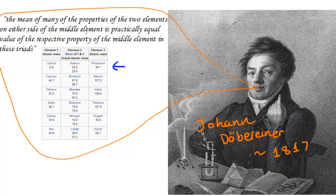In English, what that means is if you look at the elements in this first triad, if you take a look at the properties of this element on the left and this element on the right and take a mean, so if I take the atomic mass, which is one of the properties, and find a mean by adding them together and dividing by two: 6.9 plus 39.1 divided by two, I get 23.